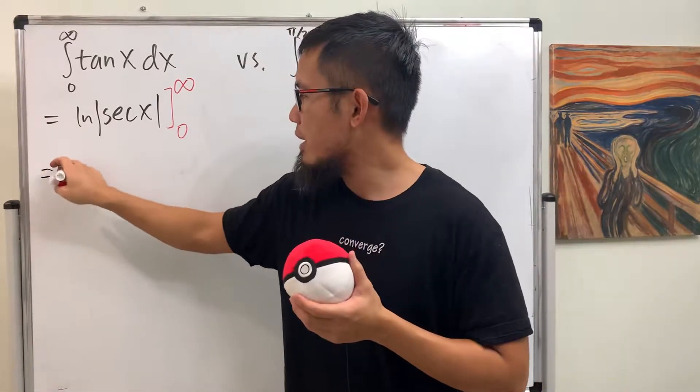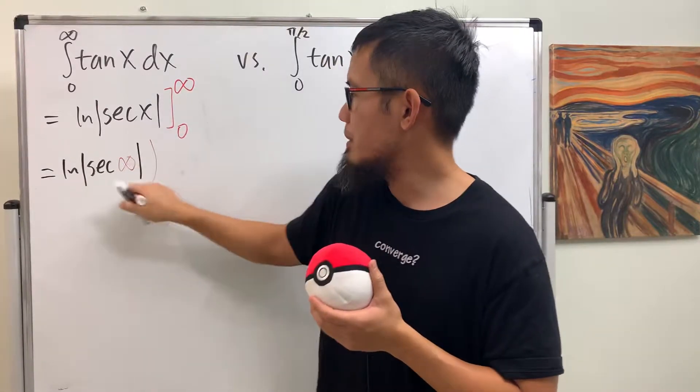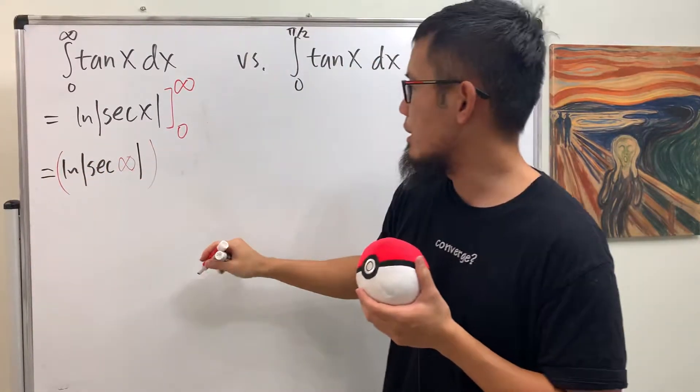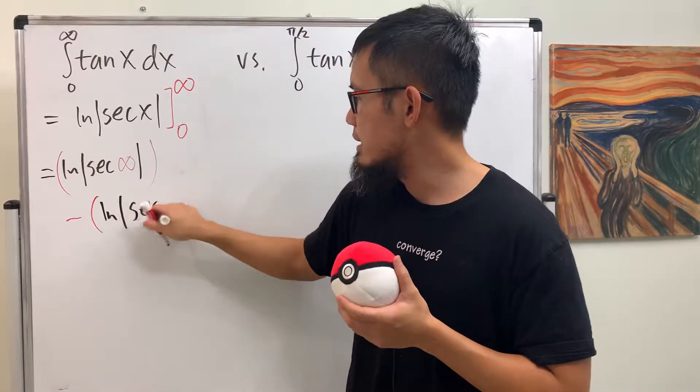If we write it down as ln absolute value of secant infinity, that's the first part, let's put a parenthesis around it, then minus ln absolute value of secant 0.